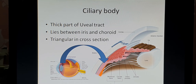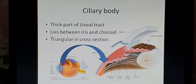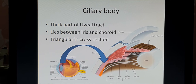Next, we discuss the ciliary body, which is a thick part of the uveal tract. It lies between the iris anteriorly and the choroid posteriorly. When we take a cross-section, the ciliary body is triangular in shape.